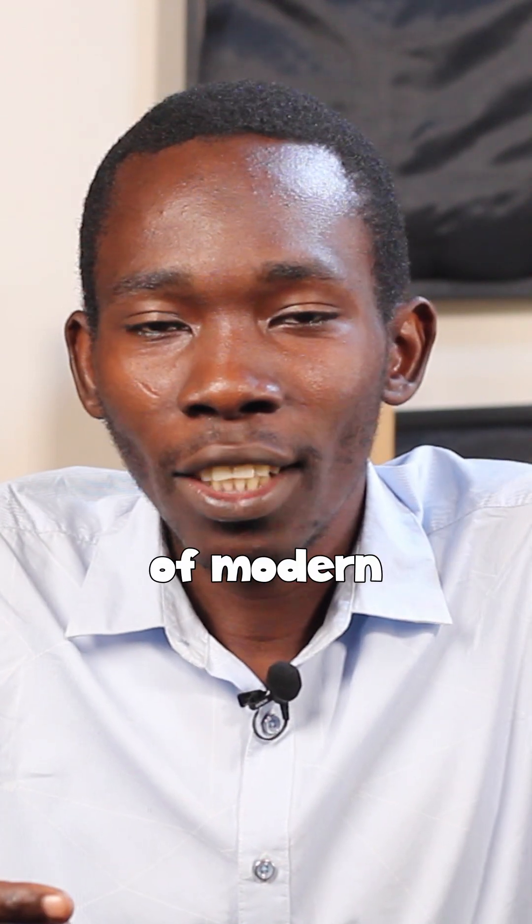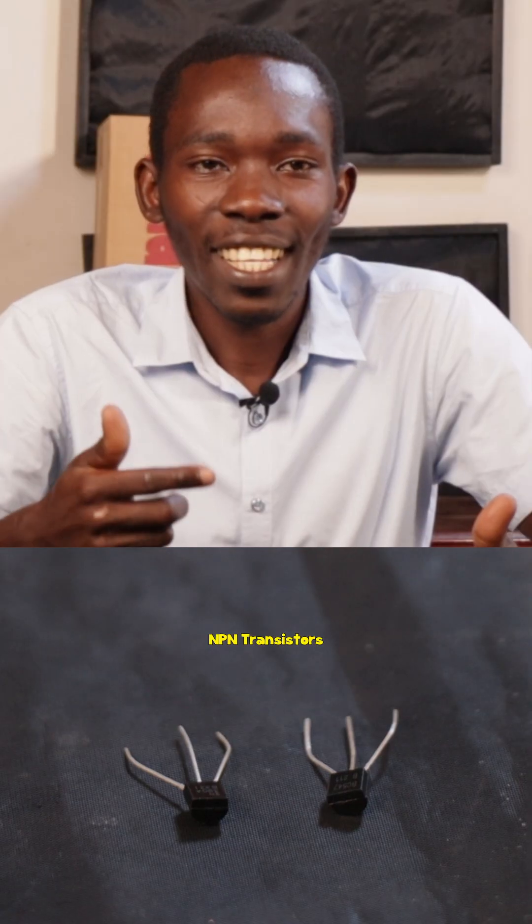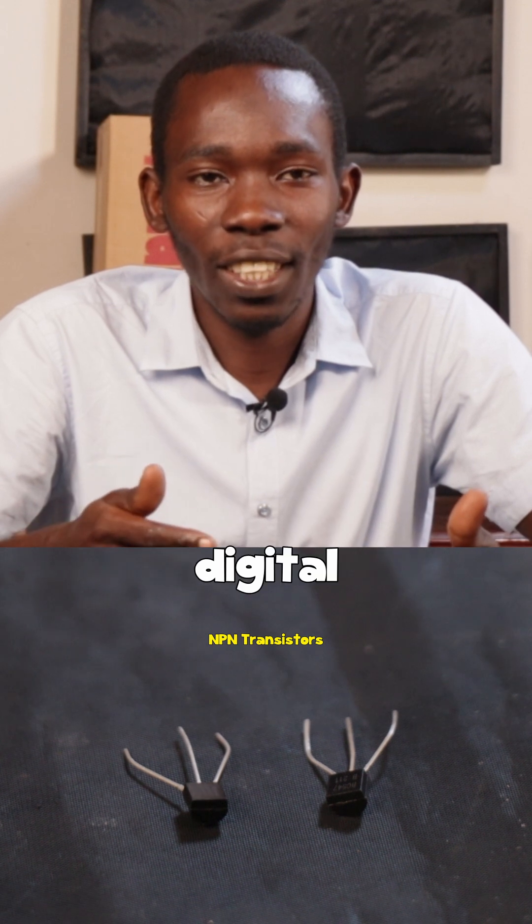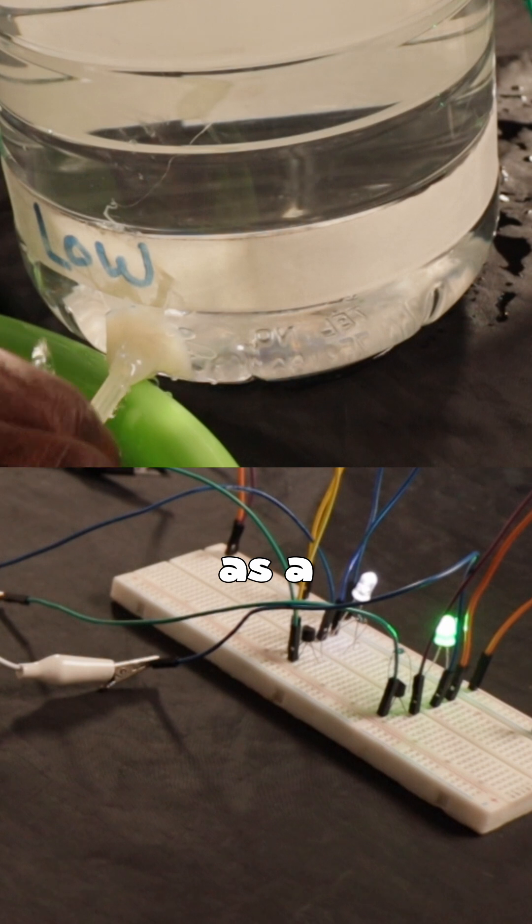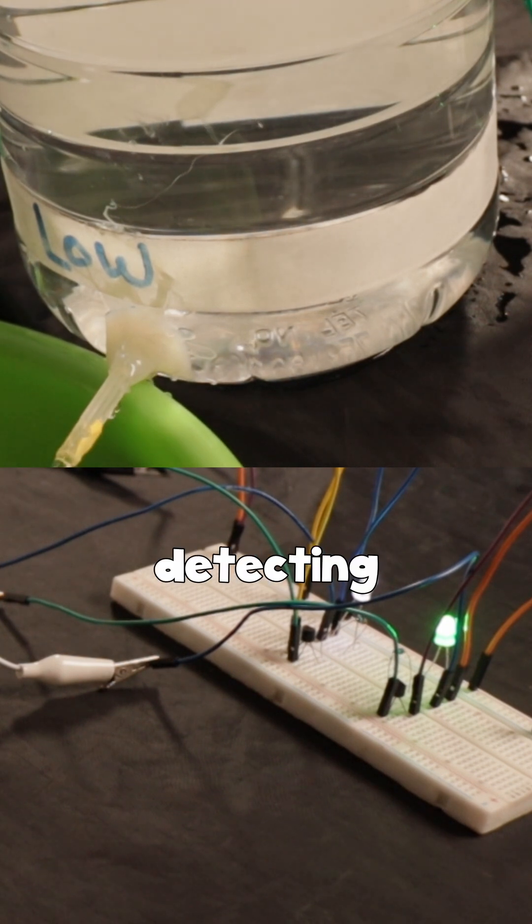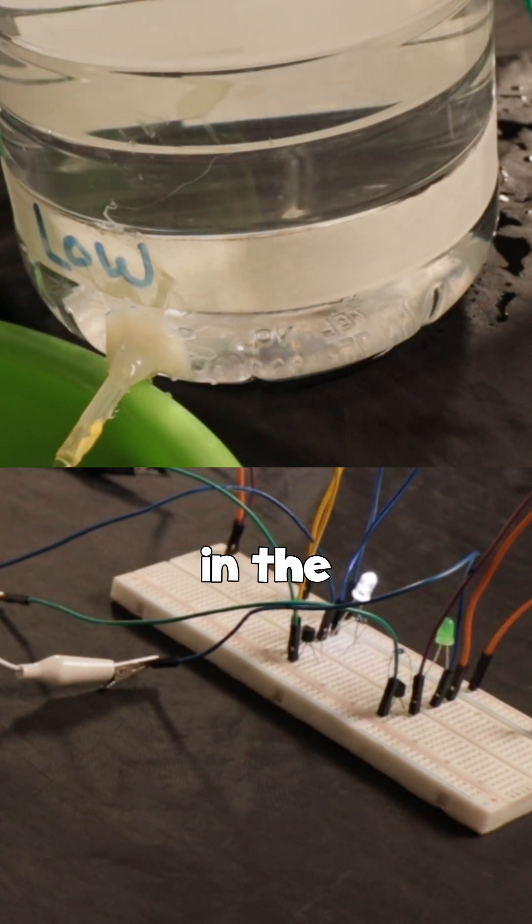As an important component of modern electronics, transistors have revolutionized our digital world. In today's video we are going to use transistors as a switch to help in detecting the level of water in the water reservoir.